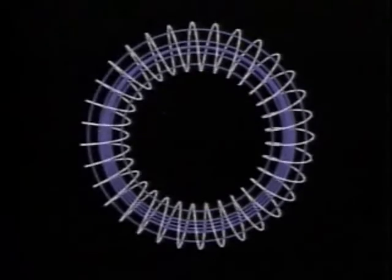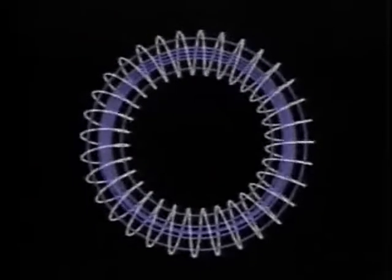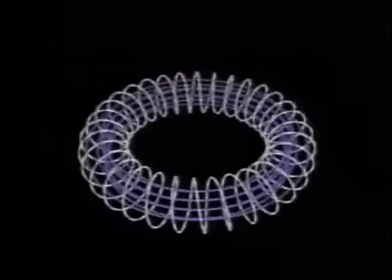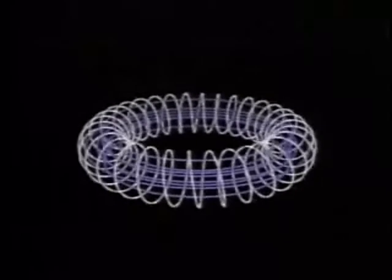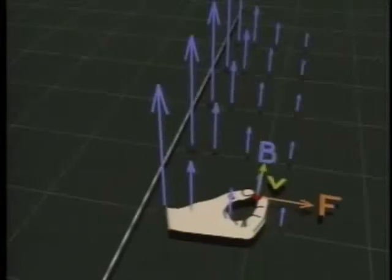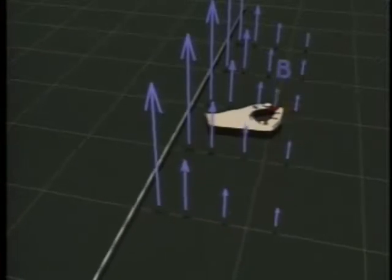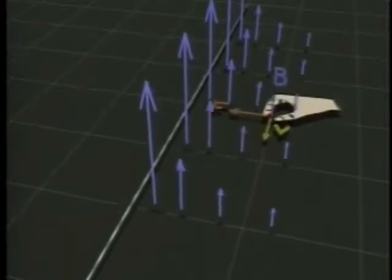If the solenoid is bent around into a circle, the donut it forms is called a toroid. The magnetic field of the toroid is contained completely inside the windings — there are no field lines outside. Since an electric current is nothing but moving electric charges, it follows that flowing electric currents apply magnetic forces to each other.